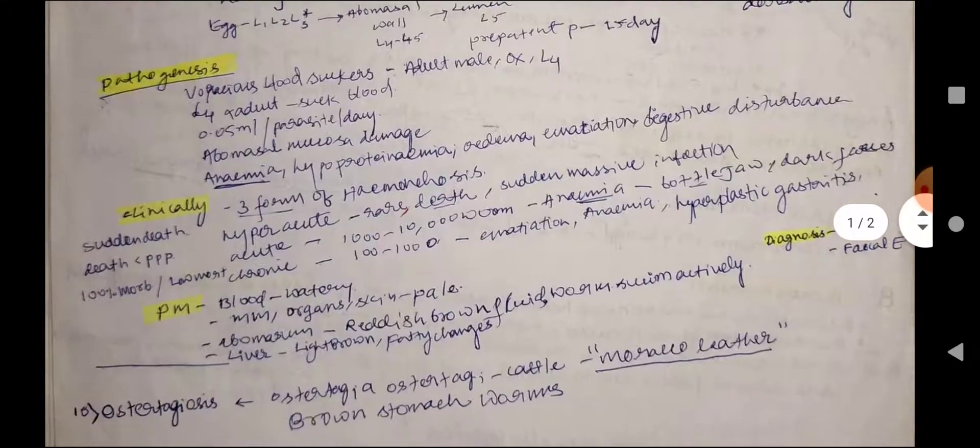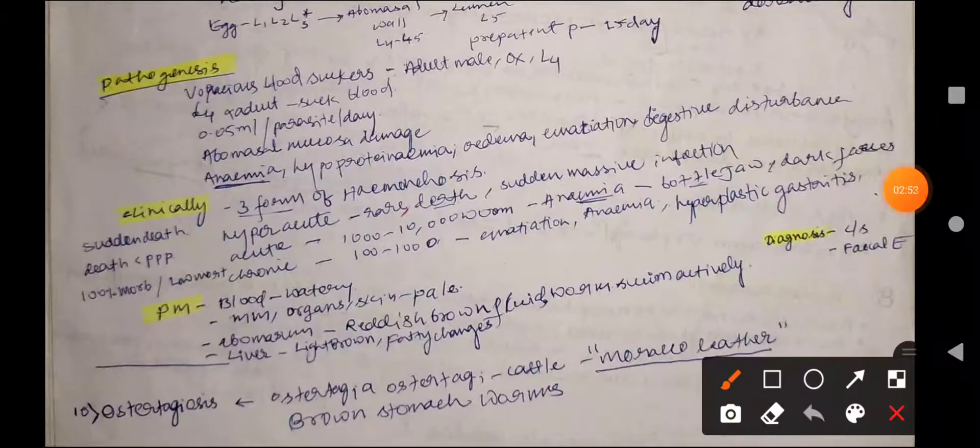Clinically, there are three forms of haemonchosis: hyperacute, acute, and chronic.